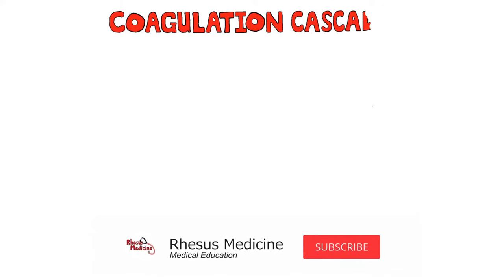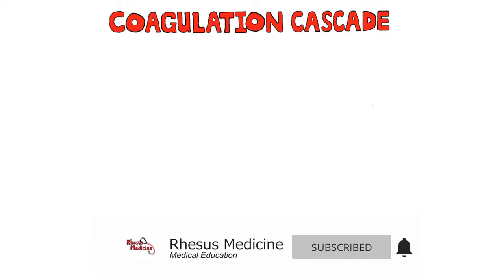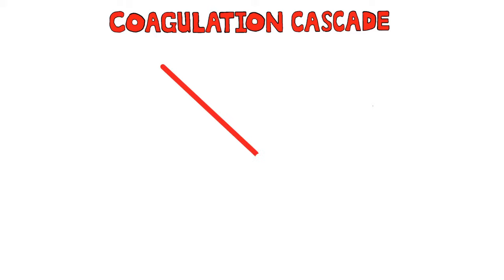The coagulation cascade is one of those topics that you learn, forget, and relearn countless times during medical school. It's not uncommon to forget which factors are part of the intrinsic or extrinsic pathways, which test is used to assess each one, or where in the pathway different drugs act. I'm going to put these together in one place and show you some tricks to remember particular bits.